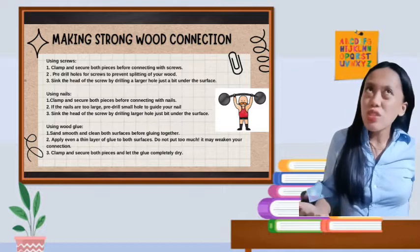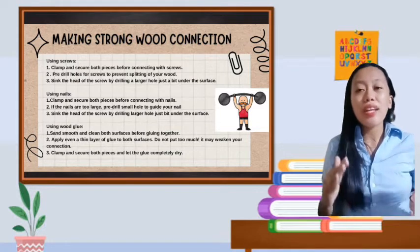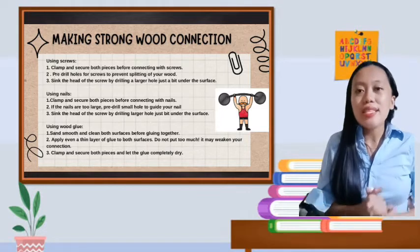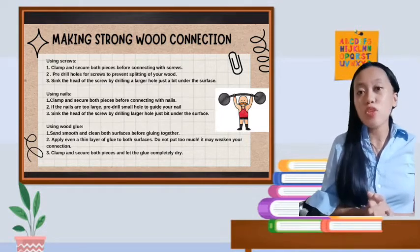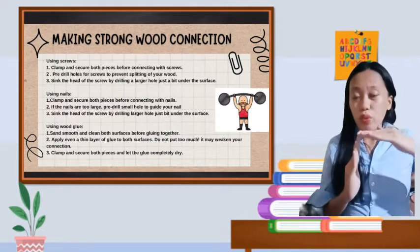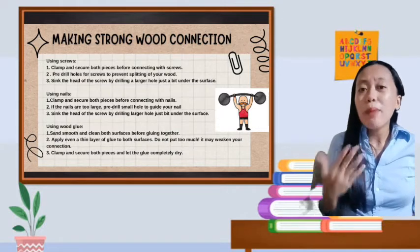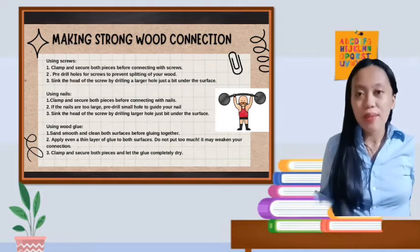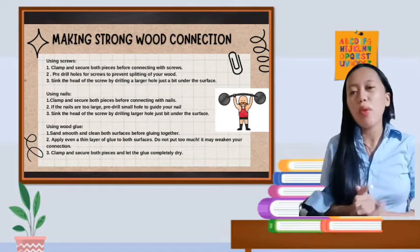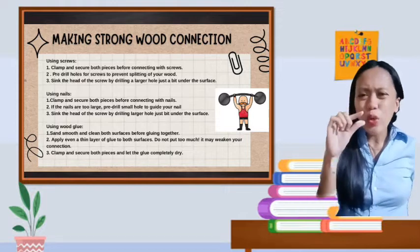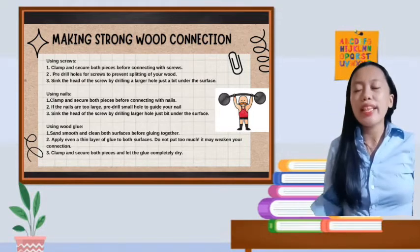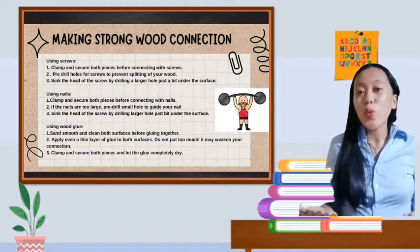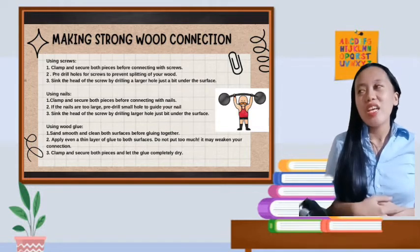Using wood glue, you can also reconnect wood. In what terms? Number one, sand smooth and clean both surfaces before gluing together. Number two, apply an even thin layer of glue to both surfaces. And do not put too much. It may weaken your connection. Even a little is enough. And number three, clamp and secure both pieces and let the glue completely dry.